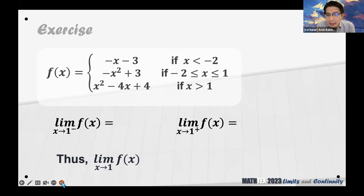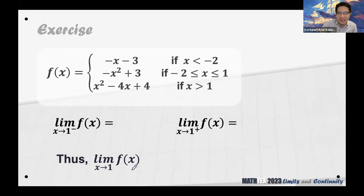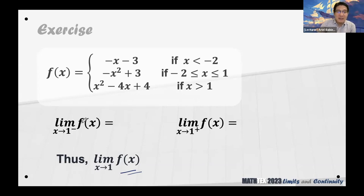For x approaches 1, let's evaluate each one-sided limit. The limit from the left of 1 uses the condition between negative 2 and 1 — that is, immediately from the left of 1. So the function is negative x plus 3, and substituting 1 gives negative 1 plus 3, which is 2.